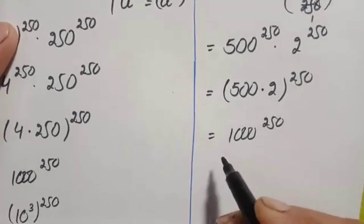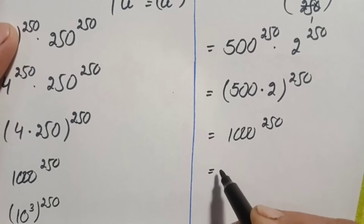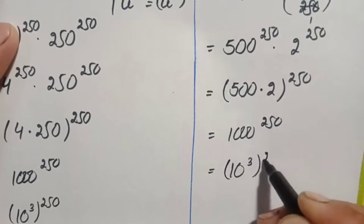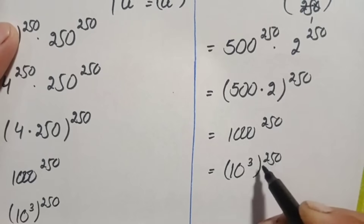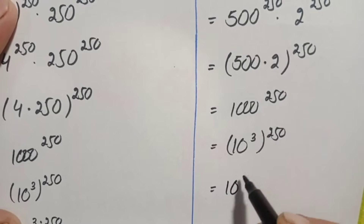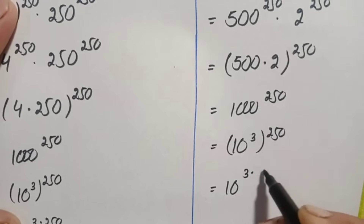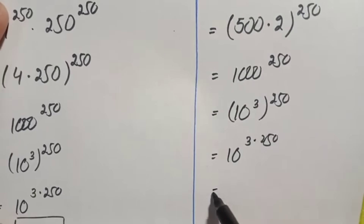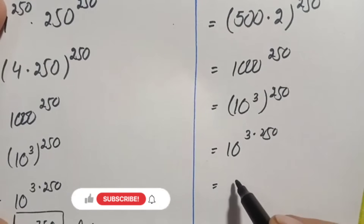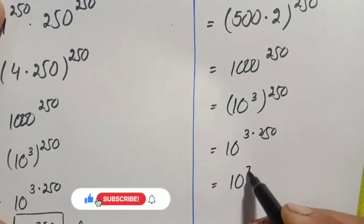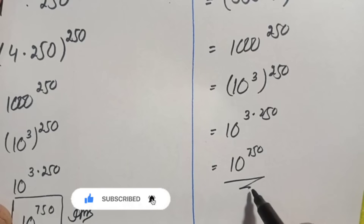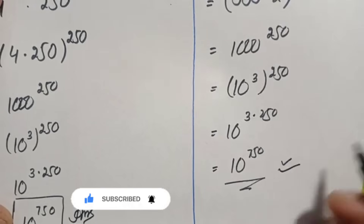Now again we will change this number to its exponential form, so we can write 1000 as 10 cubed, all raised to the power 250. Now here we will use the exponential identity and multiply the powers with each other, so this will become 10 raised to the power 3 times 250. 3 times 250 is simply 750, so this will become 10 raised to the power 750. So finally, 10 raised to the power 750 is our answer using the second method.